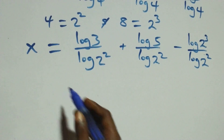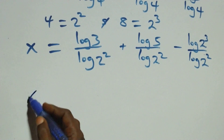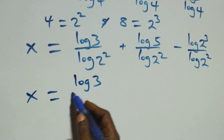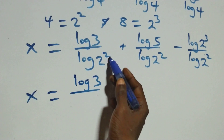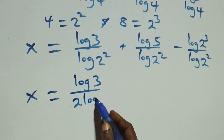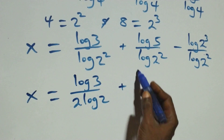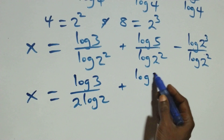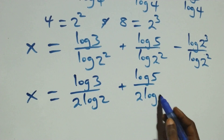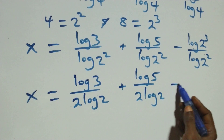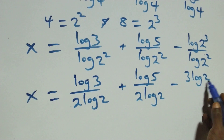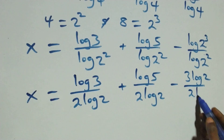Here we apply the power log rule: 2 comes in and we have 2 log 2 in the denominator. So x equals log 3 over 2 log 2, plus log 5 over 2 log 2, minus 3 log 2 over 2 log 2. The log 2 terms cancel, leaving 3 over 2.